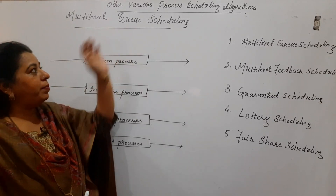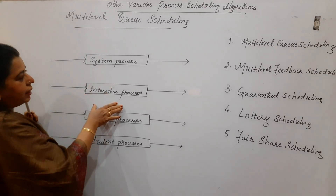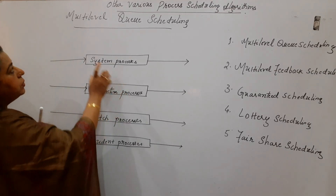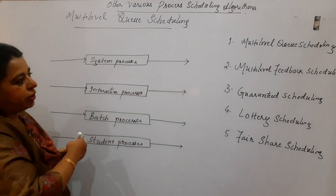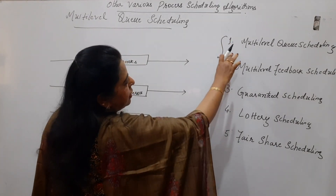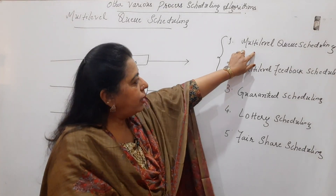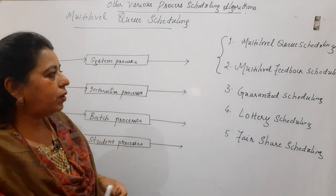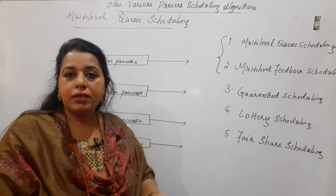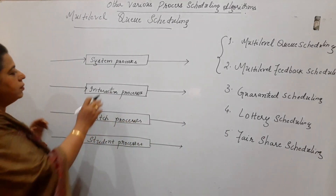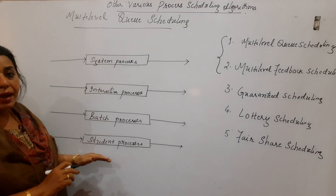Let me begin with the first one: Multi-Level Queue Scheduling. This comes under the category of multiple queues. Under multiple queues, there are two types: Multi-Level Queue Scheduling and Multi-Level Feedback Scheduling. The word 'multi-level' means there are different levels, and these levels correspond to sets of processes categorized by their type.